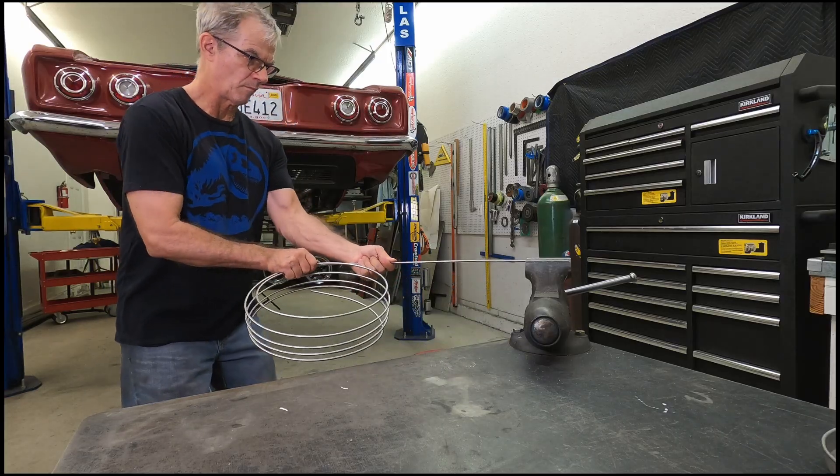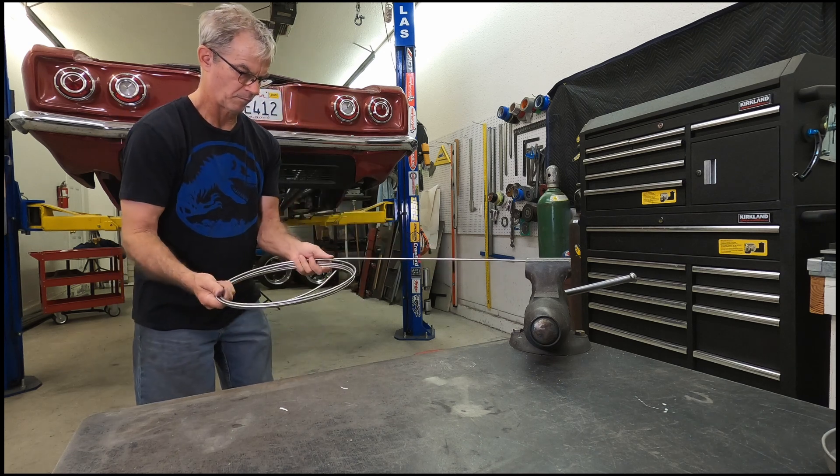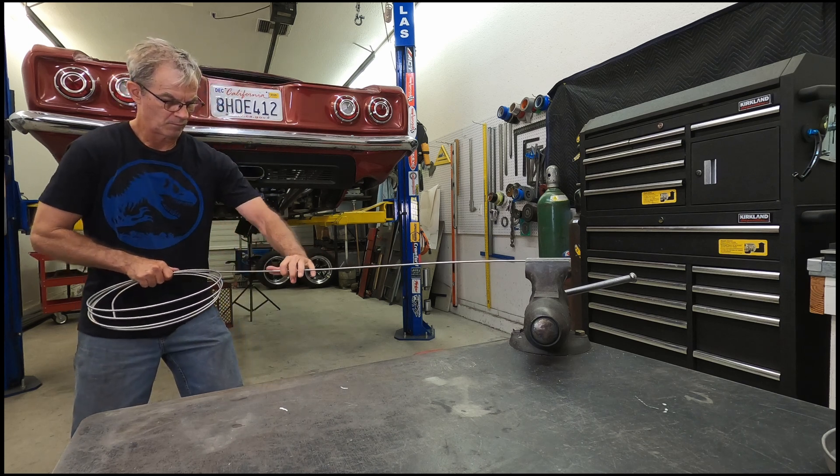The brake line tubing will more than likely come in a coil so you have to straighten it out first. They sell fancy straightening rollers to do this but I find it weirdly therapeutic to straighten it by hand.